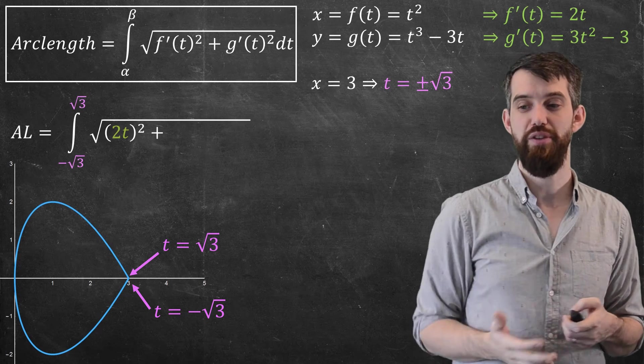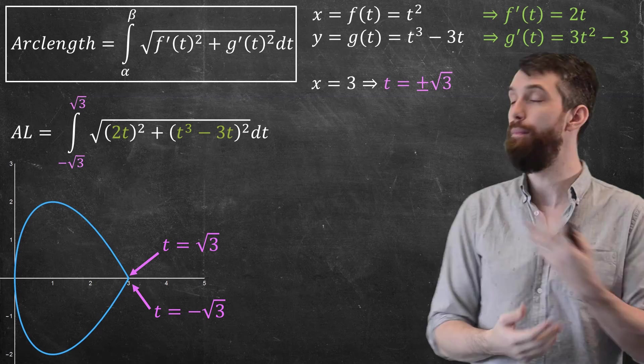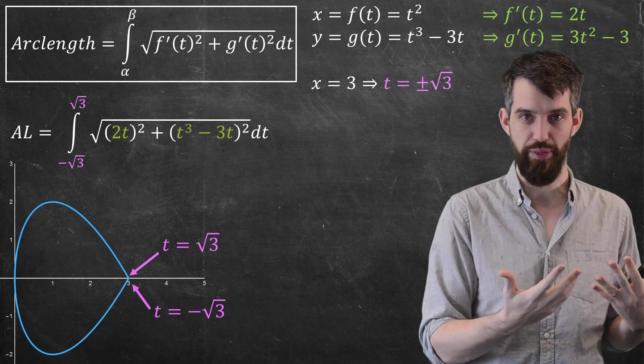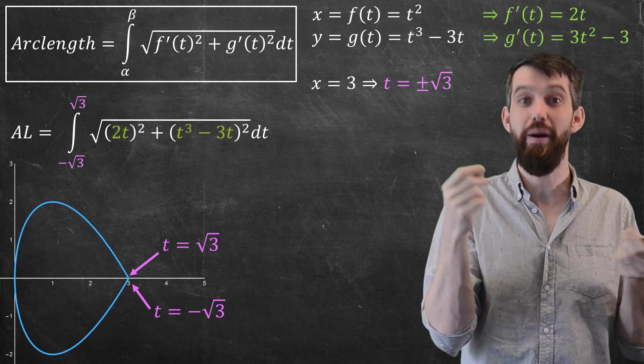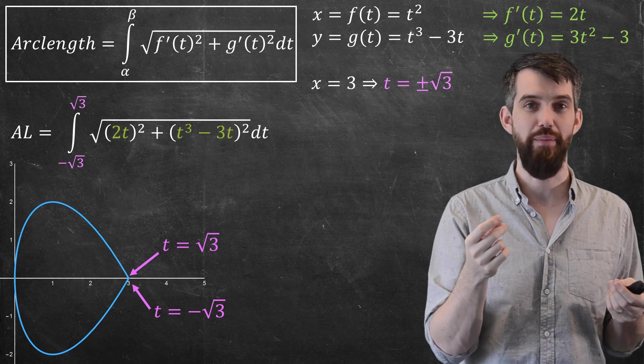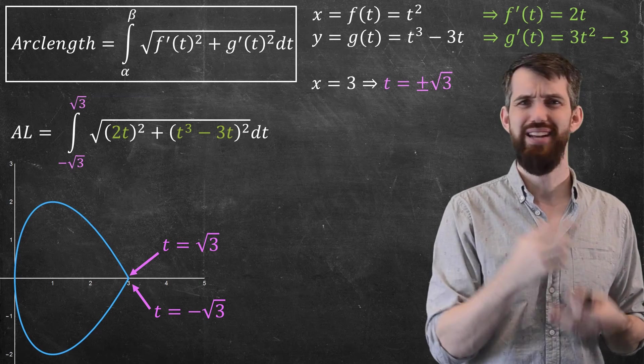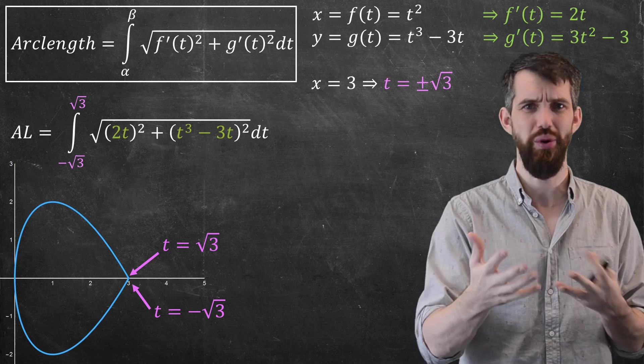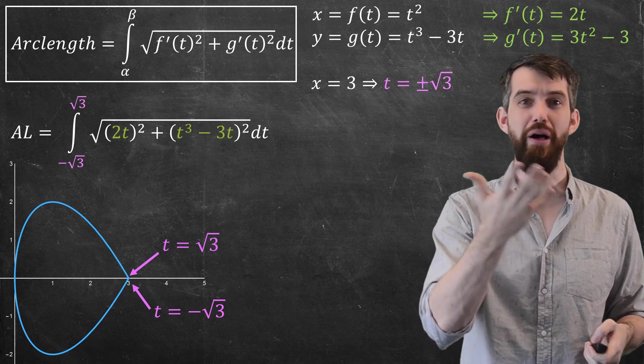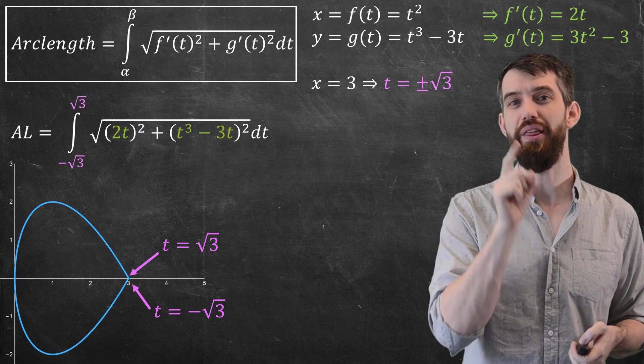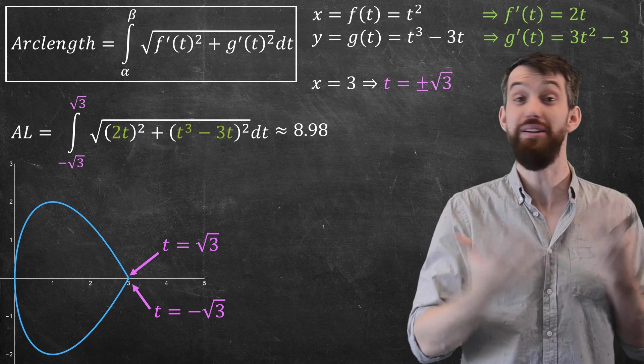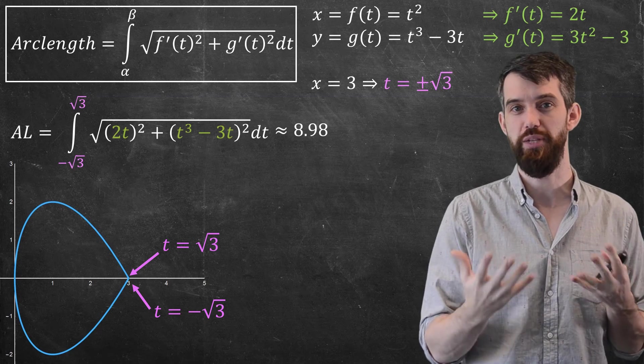So if I plug all of that into my formula, what do I have? The integral from the minus root 3 up to the plus root 3, the two endpoints of my interval of t, and then I plug in my square root of the f prime squared and the g prime squared, and this is actually a super gnarly integral, I don't really want to do it, but I can do it numerically by going to WolframAlpha or whatever you prefer, and you plug that in, and what you get is approximately 8.98 as an answer to this particular curve.